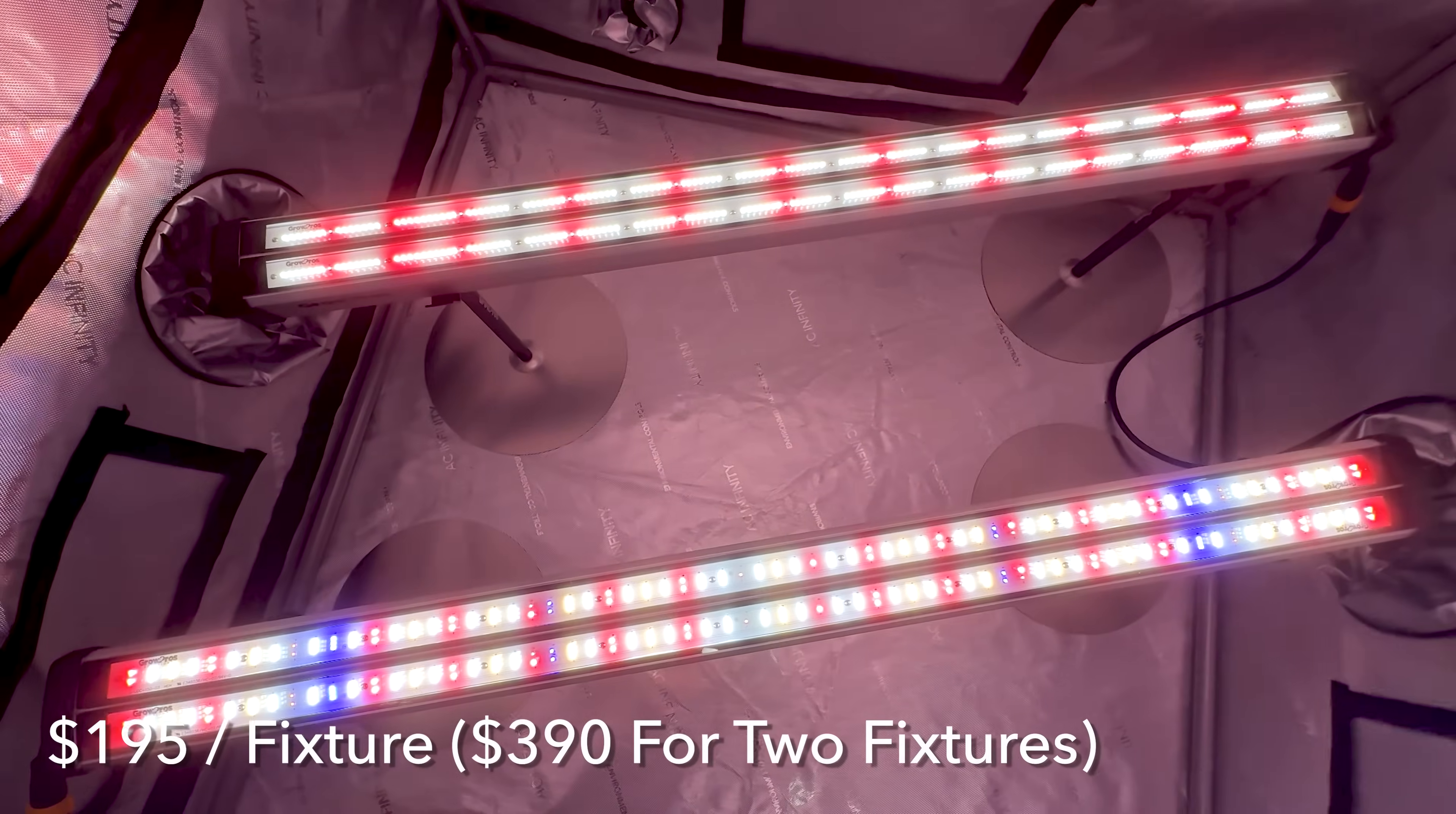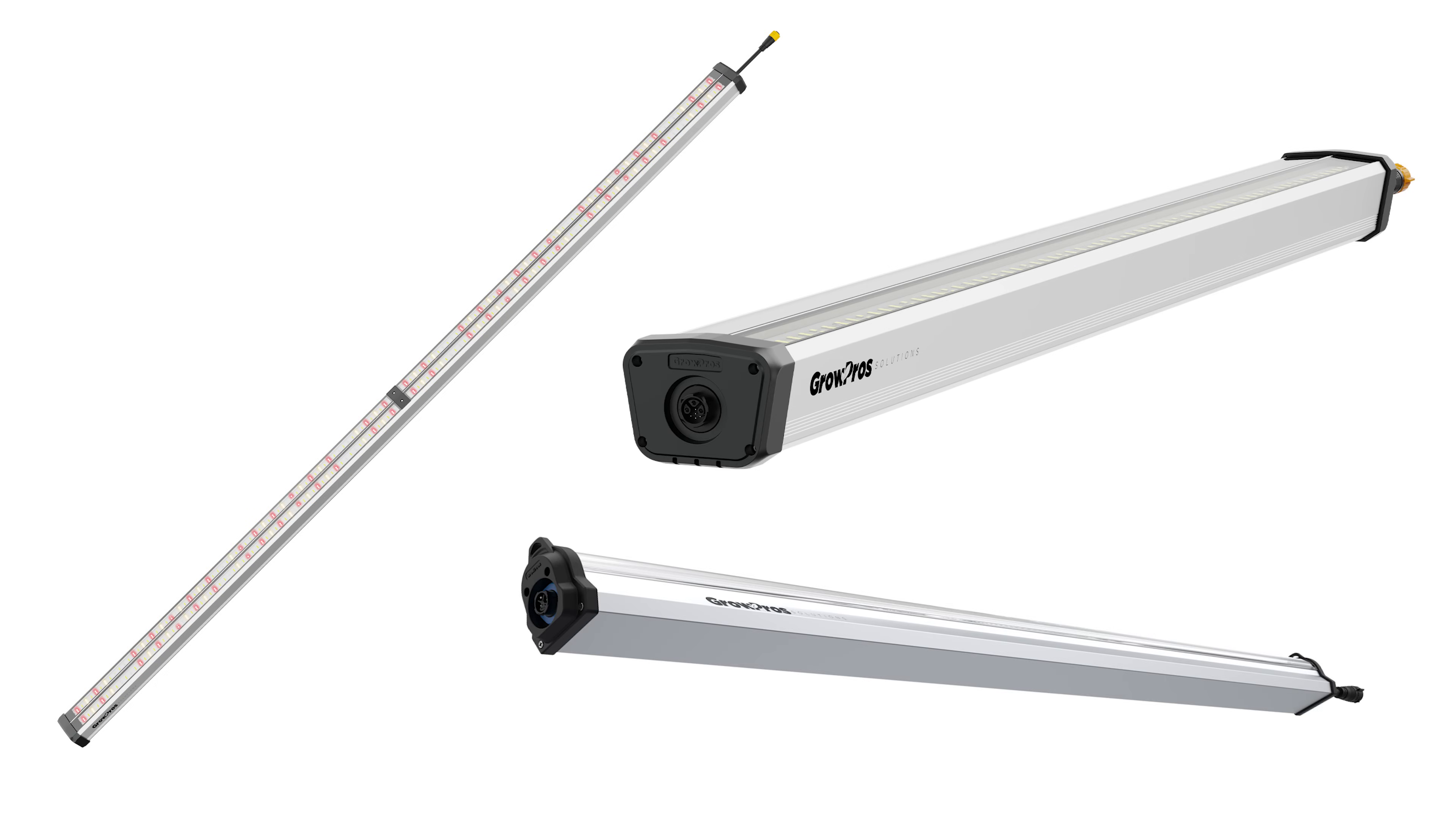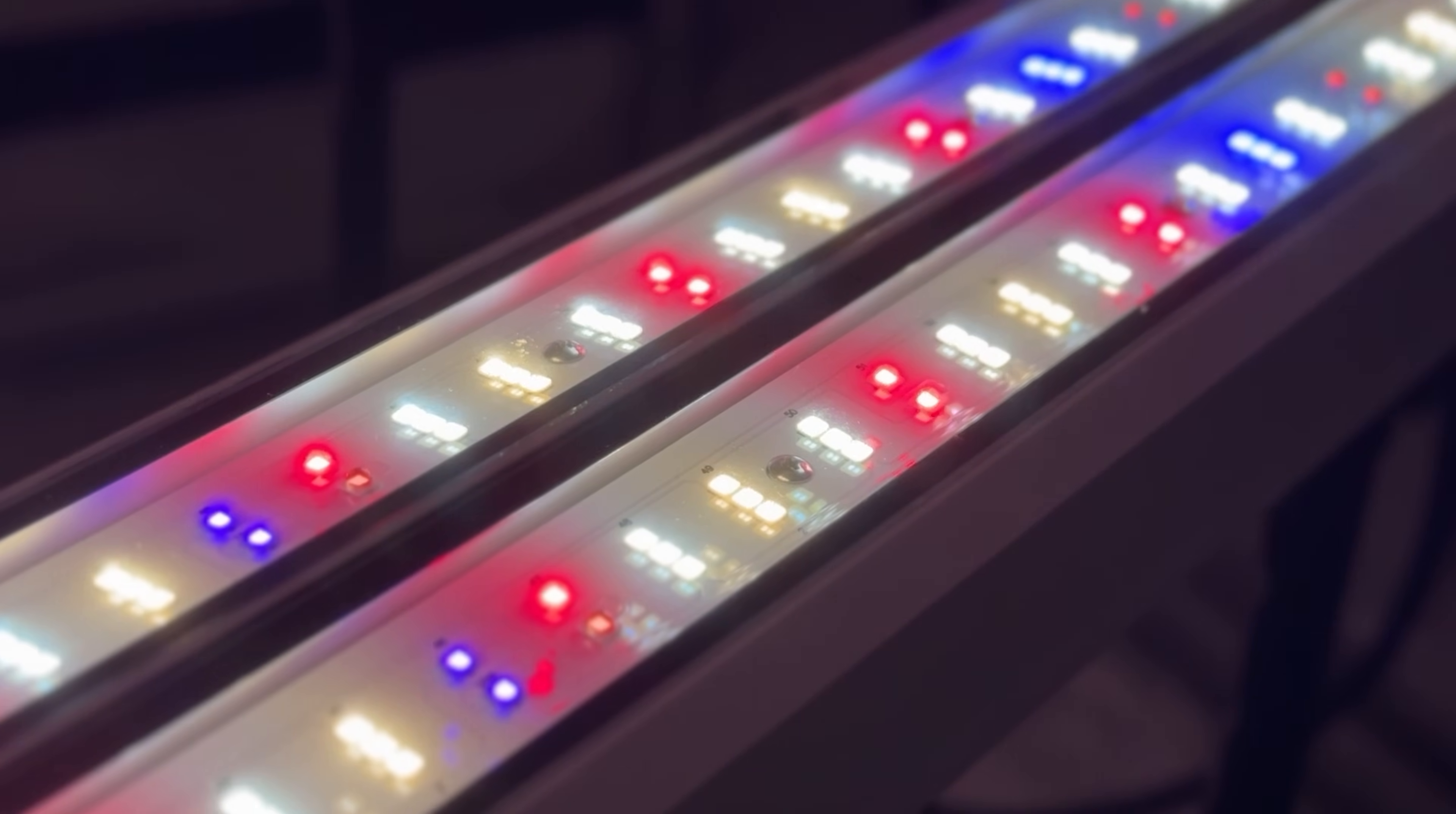If spectrum control is not your thing, check out the single spectrum Model 1, full spectrum, and Model 2, deep red spectrum, 4 foot and 8 foot under canopy lights. Links to all these lights can be found in the description. Visit ledgrowlightsdepot.com for more information. And if you found this review helpful, hit that like button and consider subscribing for more in-depth reviews. Share your questions or experiences with these lights in the comments below. Happy growing, everyone!